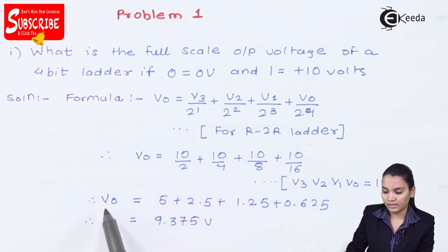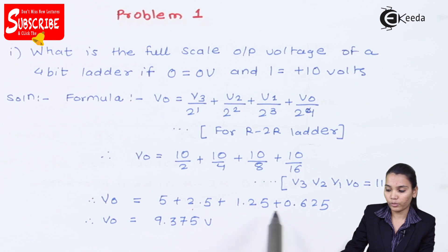Now we are going to calculate this. V0 = 10/2 is 5, 10/4 is 2.5, 10/8 is 1.25, and 10/16 is 0.625.